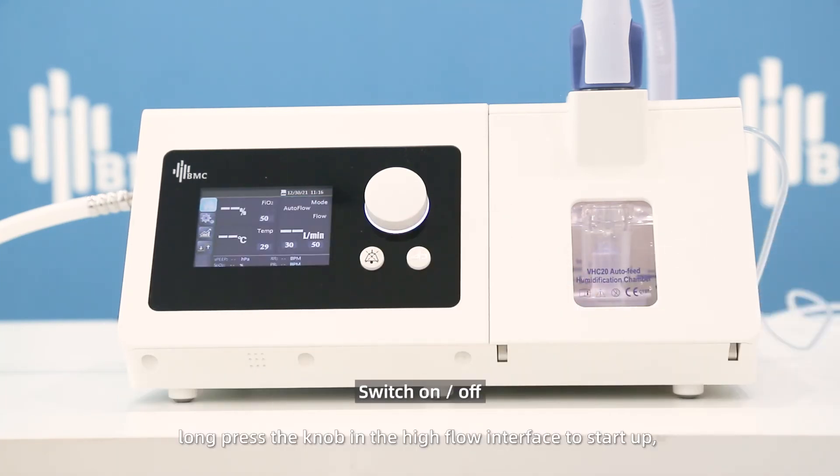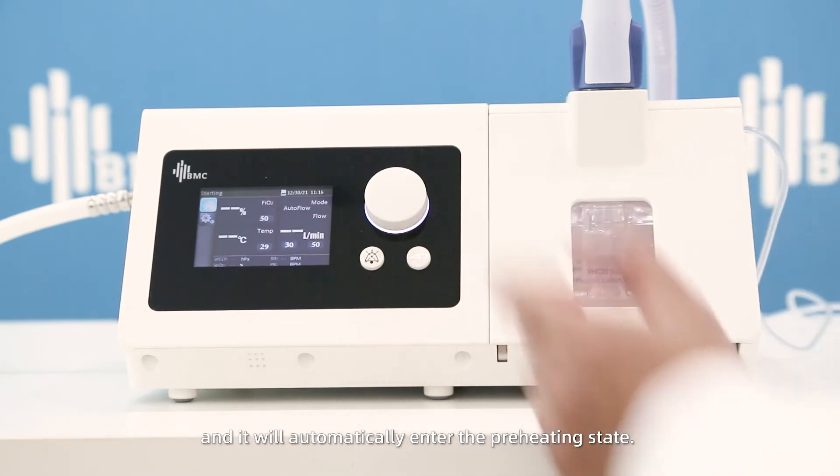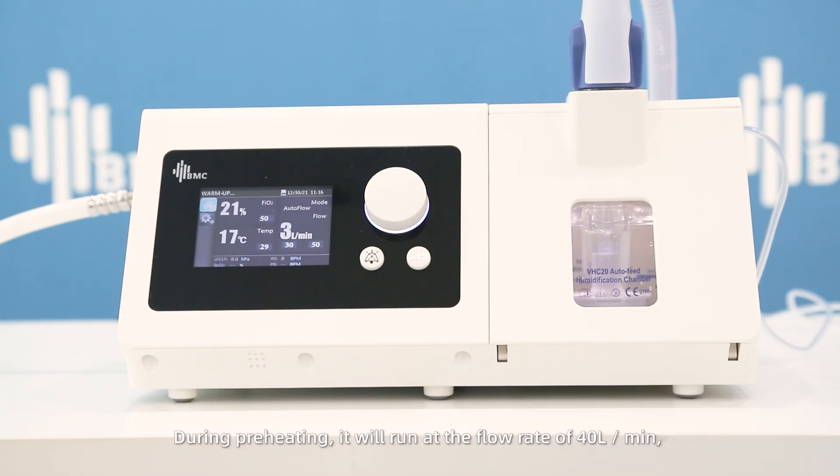Long press the knob in the high flow interface to start up, and it will automatically enter the preheating state. During preheating, it will run at a flow rate of 40 liters per minute, and there will be a prompt after preheating is completed.